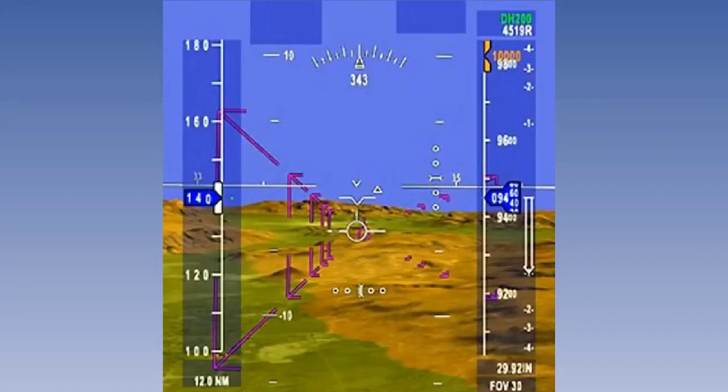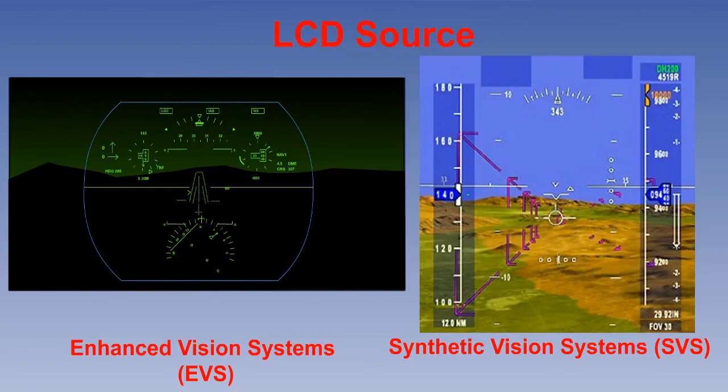Synthetic vision systems display computer-generated graphics from a database. The image has to be presented as conformal, which requires a lot of computer capacity and, of course, it is dependent on the database being correct and up-to-date. Both systems offer a lot of promise. EVS systems are in operational aircraft already and SVS seems likely to follow once the problems of database integrity are resolved.